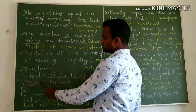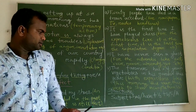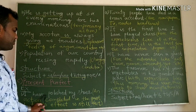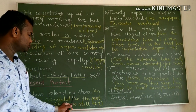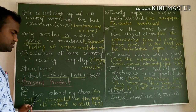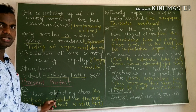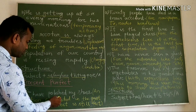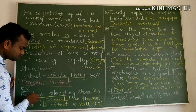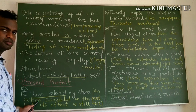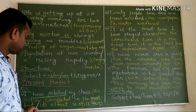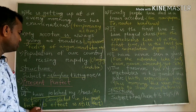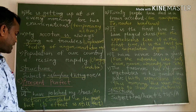Now let's read about present perfect. Example: I have polished my shoes — my shoes are shining. This uses 'have polished'. It describes an action completed in the past with a result visible in the present.